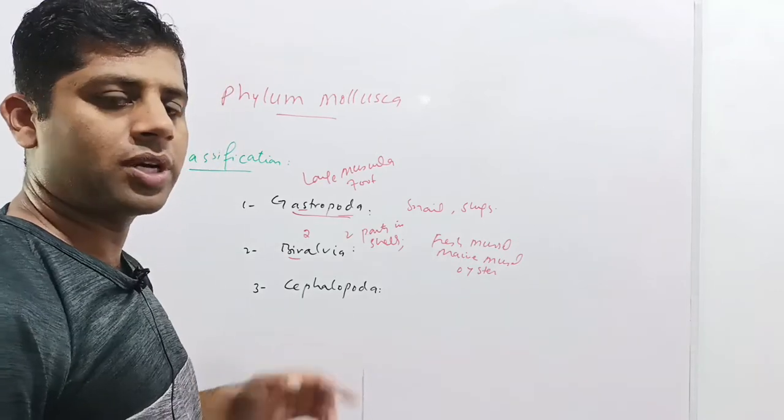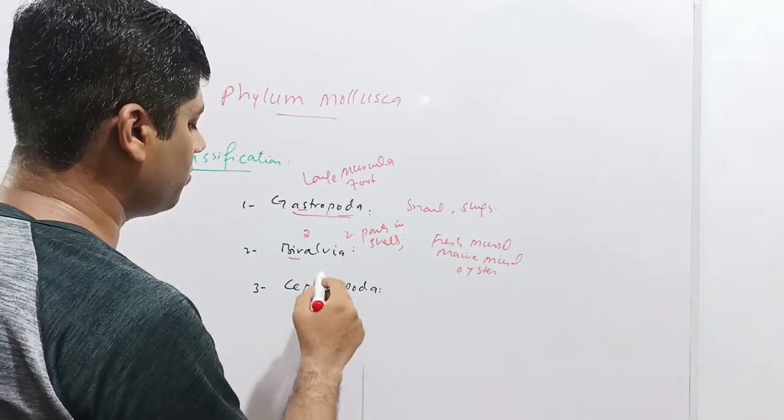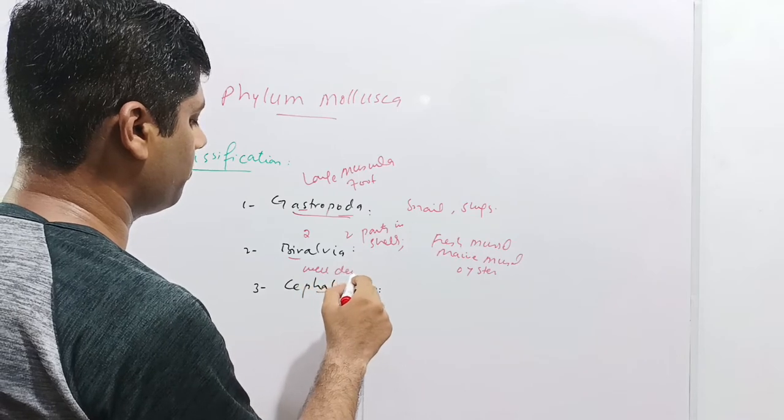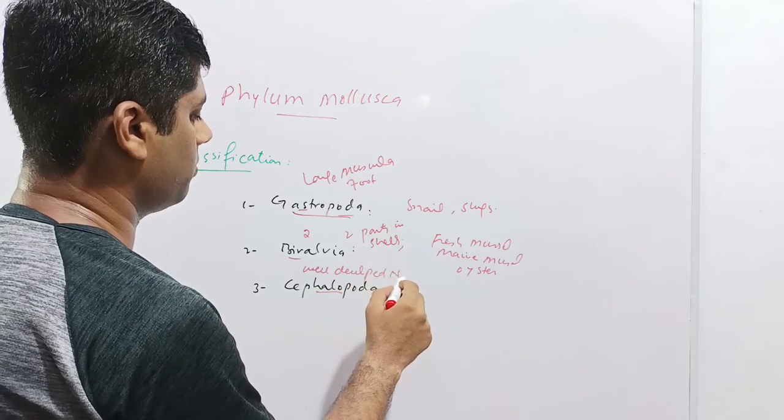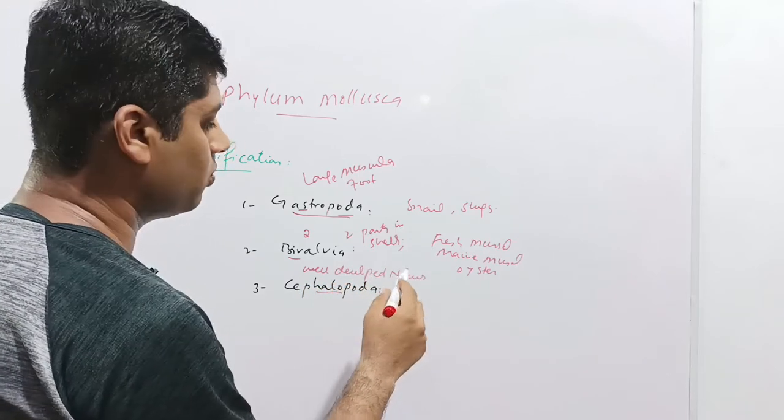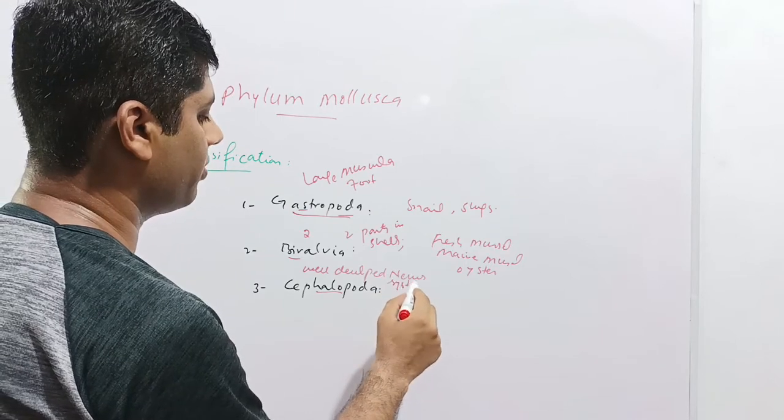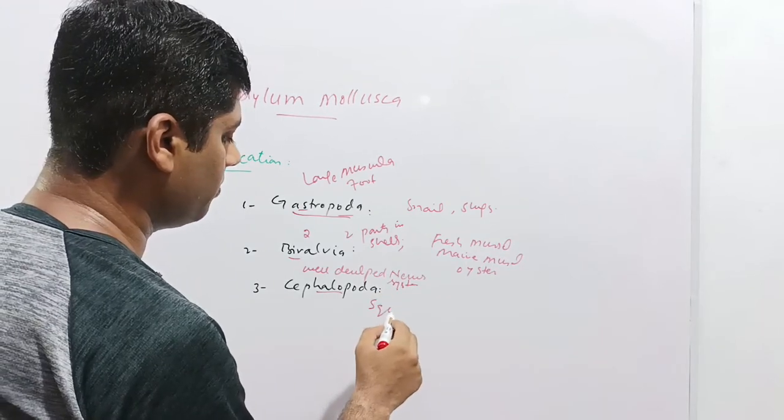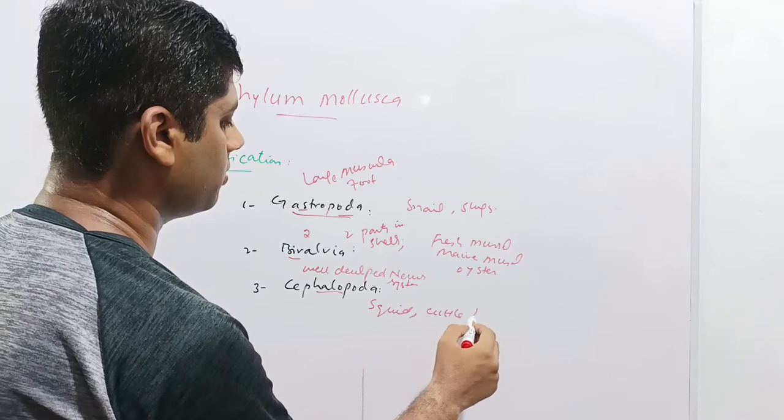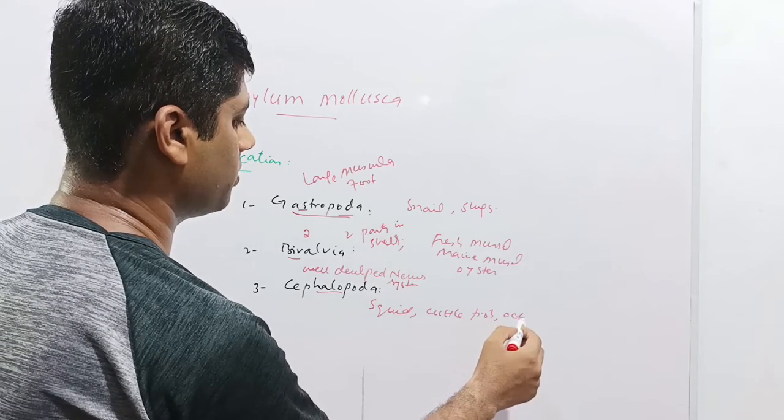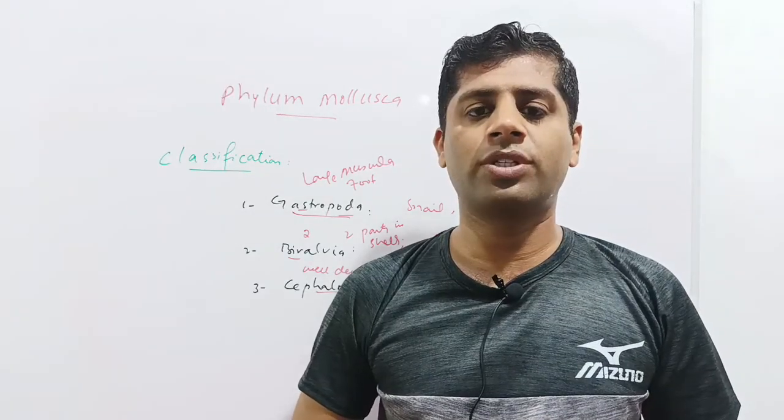The third class is cephalopoda. Cephalopoda are the animals with well-developed nervous system, or the molluscs with well-developed nervous system are called cephalopoda. For example, the squid, cuttlefish and octopus. So these are the three classes of mollusca.